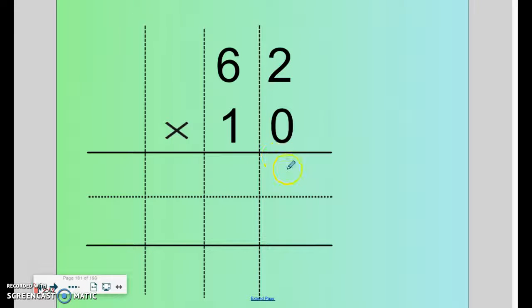So 0 times 2 is 0. 0 times 6 is 0. We kill the 0 and bury it with a 0. 1 times 2 is 2. 1 times 6 is 6. And it makes our addition a lot easier.